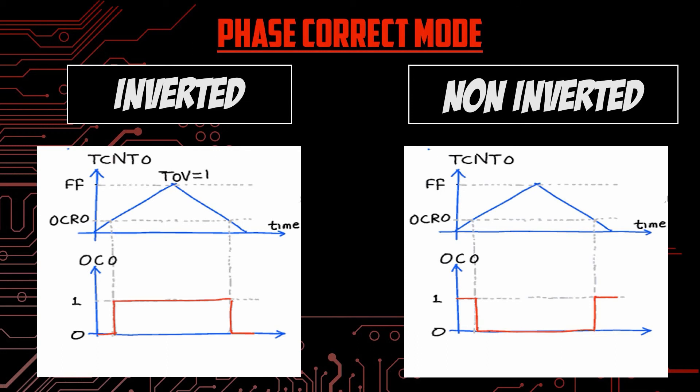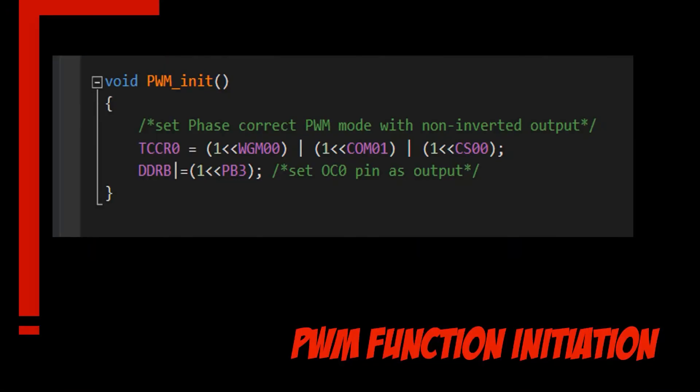In this video, I will be using a phase correct non-inverted mode to do the simulations. We are going to look at how to control the brightness of an LED using PWM waves. Initially, we have to initiate the PWM wave using a function. Let's look onto the initiation function of PWM wave. As we saw initially, we have to set the register bits according to our need.